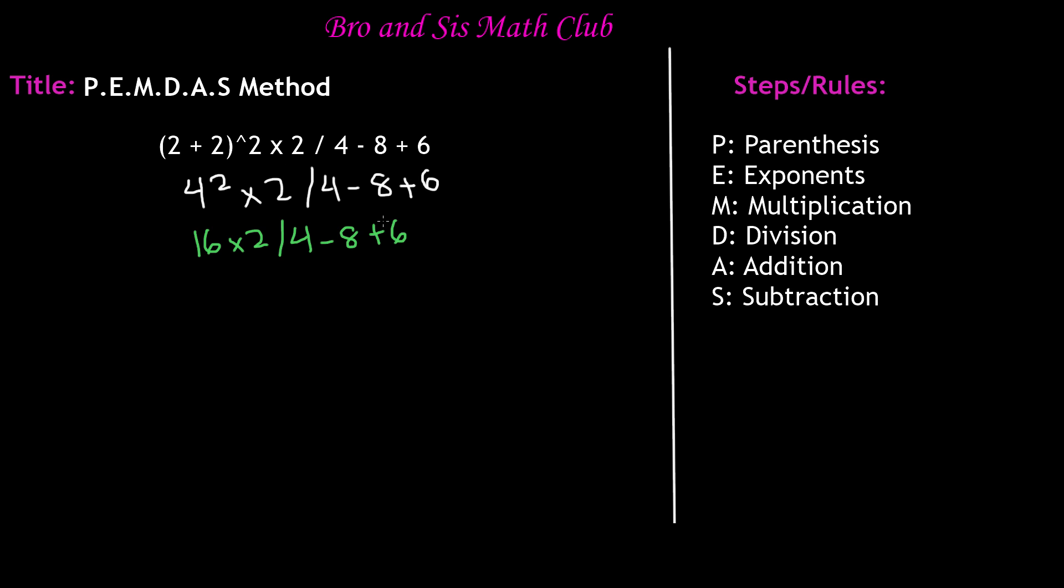If addition comes first, you do addition. If subtraction comes first, you do subtraction. In this case, if we take a look at this, we have to find either multiplication or division going from left to right. Reading this problem from left to right, we see that we have multiplication here, which is 16 times 2. We all know that 16 times 2 is 32. So we'll write 32 and then bring everything else down. So divided by 4 minus 8 plus 6.